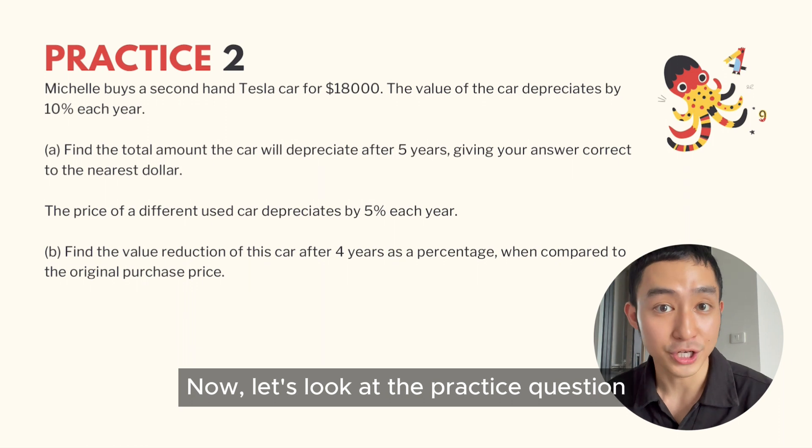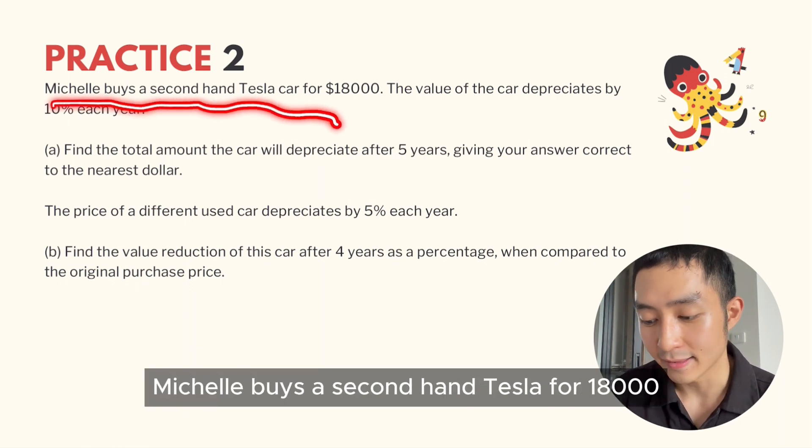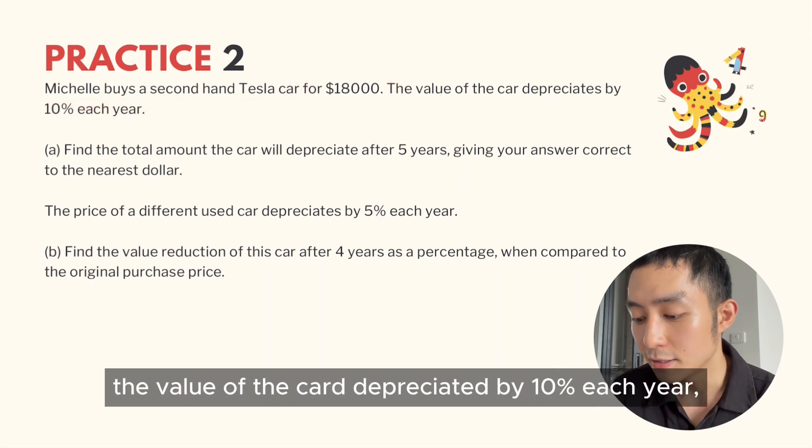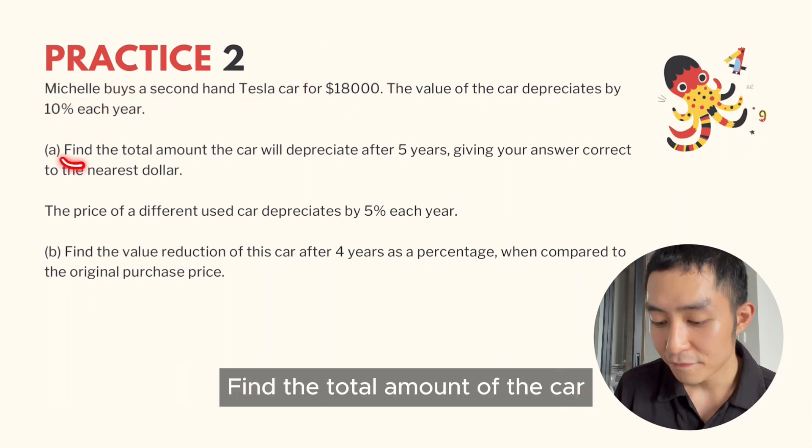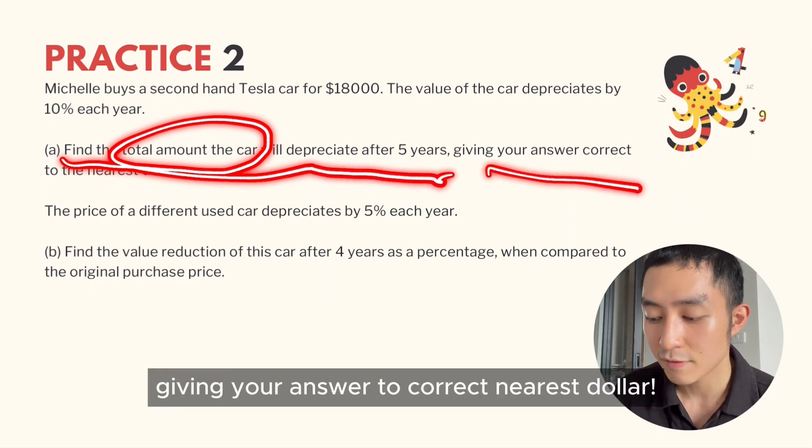Now let's look at the practice question for annual depreciation. Michelle buys a second-hand Tesla for $18,000. The value of the car depreciates by 10% each year. Find the total amount the car will depreciate after five years, giving your answer to the nearest dollar.